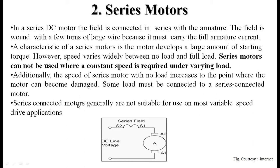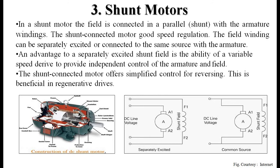A circuit diagram for series motors is shown here. The next type is the shunt motor. In a shunt motor, the field is connected in parallel — or shunt — with the armature windings. Two variations are shown: one with separately excited windings and one with a common DC source, where the field and armature are connected in parallel.